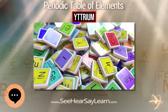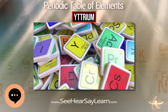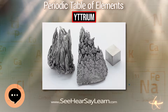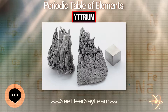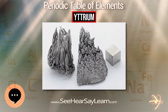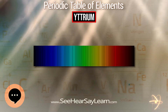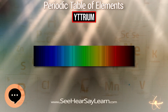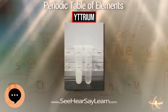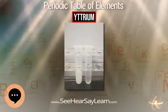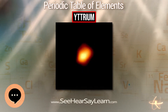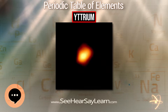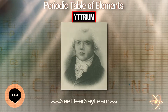Yttrium is a chemical element with symbol Y and atomic number 39. It is a silvery metallic transition metal, chemically similar to the lanthanides and has often been classified as a rare earth element. Yttrium is almost always found in combination with lanthanide elements in rare earth minerals and is never found in nature as a free element. 89Y is the only stable isotope and the only isotope found in the Earth's crust.